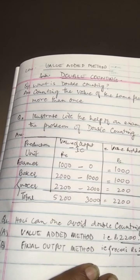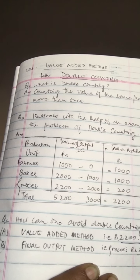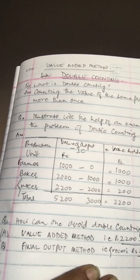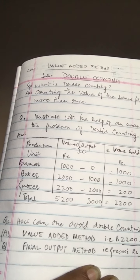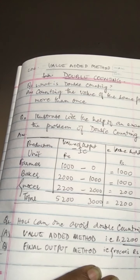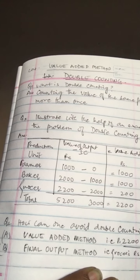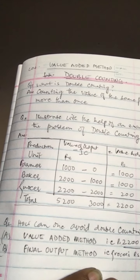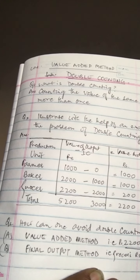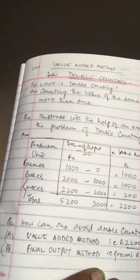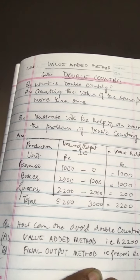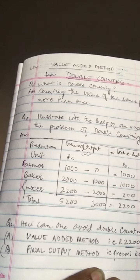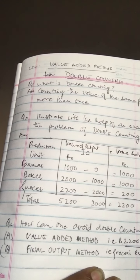The total output of the three together is rupees 5200. But this is not the value of actual physical output, because this includes the value of wheat three times and the value of bread twice. This has led to the overestimation of national income.